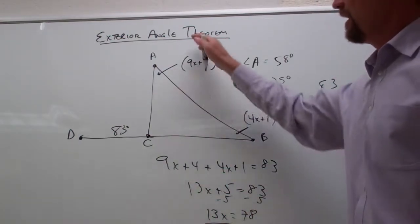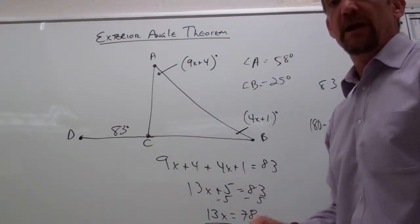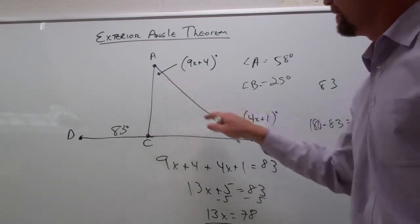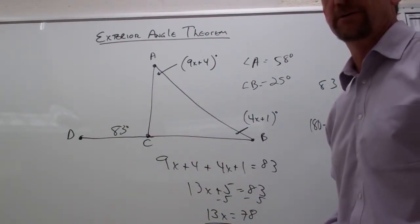And that's how you can use the exterior angle theorem, as well as the triangle sum theorem, to find missing angle measures in triangles.